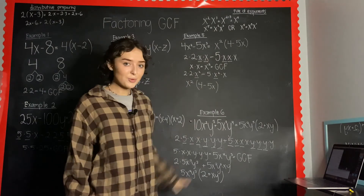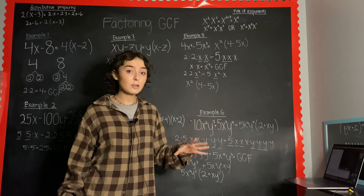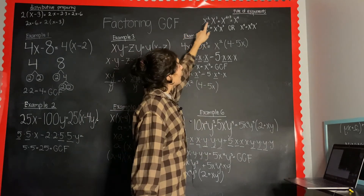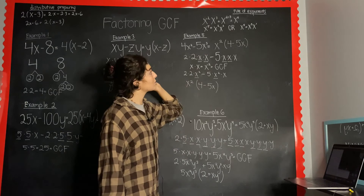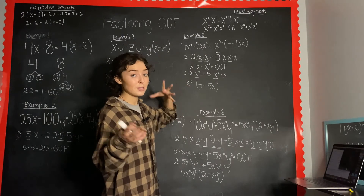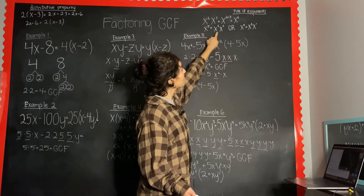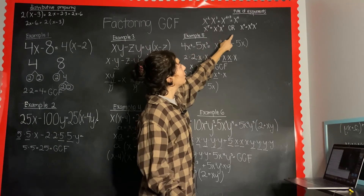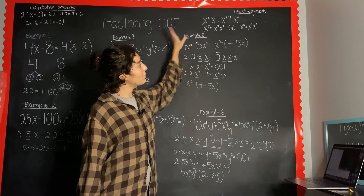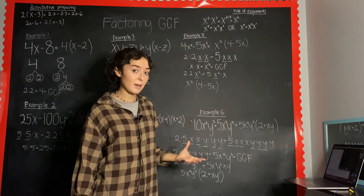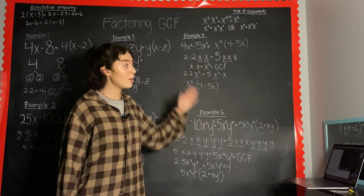For the next two examples we're going to be using rules of exponents — check out the first video for a refresher. The rule we're using: x² times x³ equals x^(2+3) = x⁵. This rule also goes backwards: x⁵ equals x² times x³, or x⁴ times x¹. This regrouping rule is particularly important when factoring the greatest common factor with variable exponents.